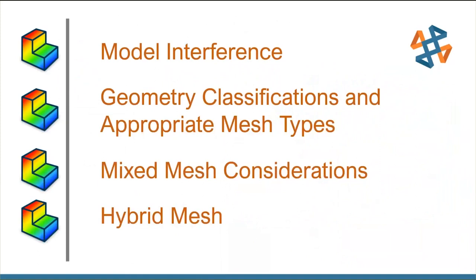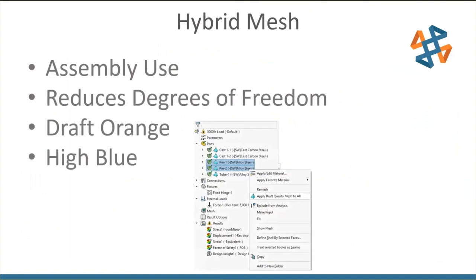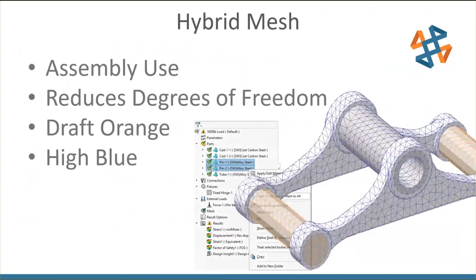Let's talk about the hybrid mesh — new for 2020. The hybrid mesh is used in assemblies only; it cannot be part of a multi-body part. It reduces the number of degrees of freedom by allowing you to assign draft quality meshes to certain parts and high quality meshes to other parts. On screen, draft quality shows up with an orange outline to the mesh, and high quality shows up with a blue outline.